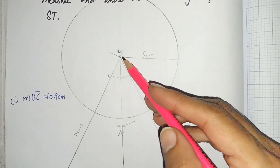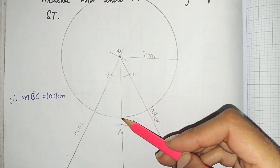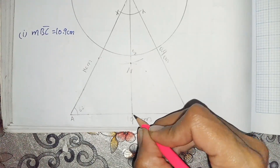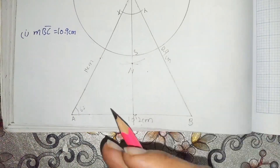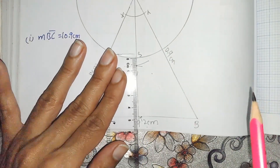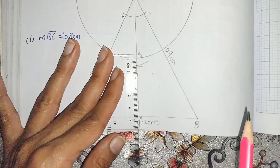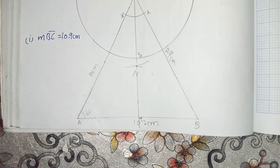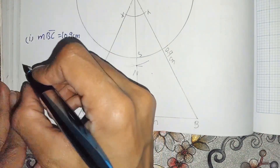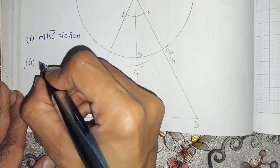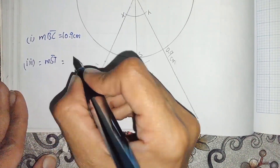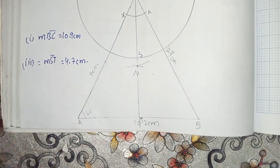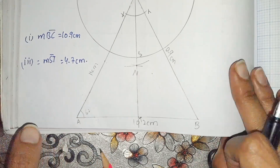The line cuts the circle at point S, and the point where it cuts line AB is point T. Now we measure ST. ST is equal to 4.7 cm. This is the answer of part number three. We have solved question 12.